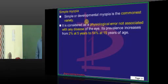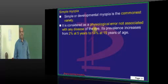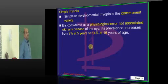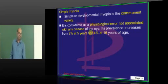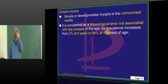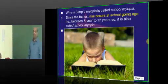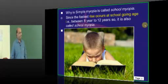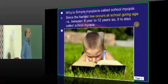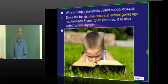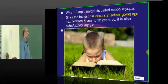Simple myopia is typically a physiological error without any associated disease in the eye. If you have 5-year-old children in a classroom, 2 out of 100 will have it. By 15 years, about 14% of children will be developing simple myopia. Why is it called school myopia? Because in the school-going age, between 8 to 12 years, many children develop myopia — hence it is called school myopia.